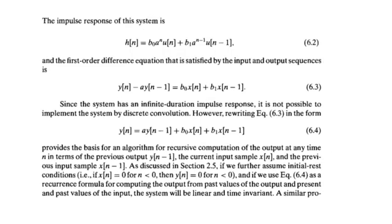If I convert the previous H(z) into an impulse response, I would need to take the inverse z-transform. Using the inspection method, I can say h(n) is equal to b0·aⁿ·u(n), on the basis of the region of convergence — it's a right-sided signal. So we have u(n) plus b1·aⁿ⁻¹·u(n−1). This is the impulse response of Equation 6.1.